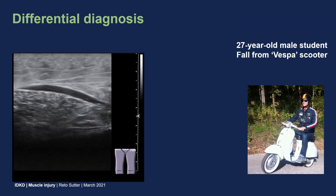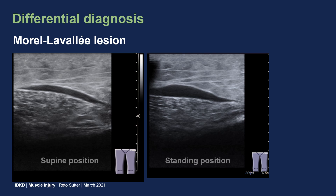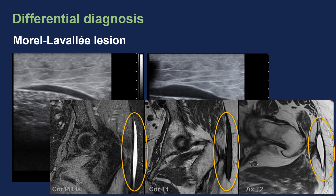What are the differential diagnoses to delayed onset muscle soreness? In addition to the different types of muscle injuries we already discussed, here is a case with a very similar appearance at ultrasound. You can see increased fluid in this 27-year-old student who fell from a Vespa scooter and suffered a degloving injury of the muscle fascia at the peritrochanteric region. The fluid is actually trapped between two layers of the fascia, and we see a different fluid distribution in the supine and standing position. This is a classic case of a Morel-Lavalet lesion, and as the fluid is trapped between the fascia layers, these lesions often persist for a long time and may need to be drained.